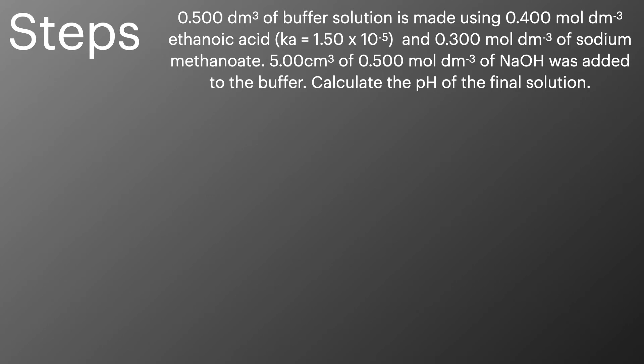If we take a look at this example: 0.5 dm³ of buffer solution is made using 0.4 mol dm⁻³ ethanoic acid (Ka = 1.50 × 10⁻⁵) and 0.3 mol dm⁻³ sodium methanoate. 5.00 cm³ of 0.500 mol dm⁻³ NaOH was added to the buffer. Calculate the pH of the final solution.